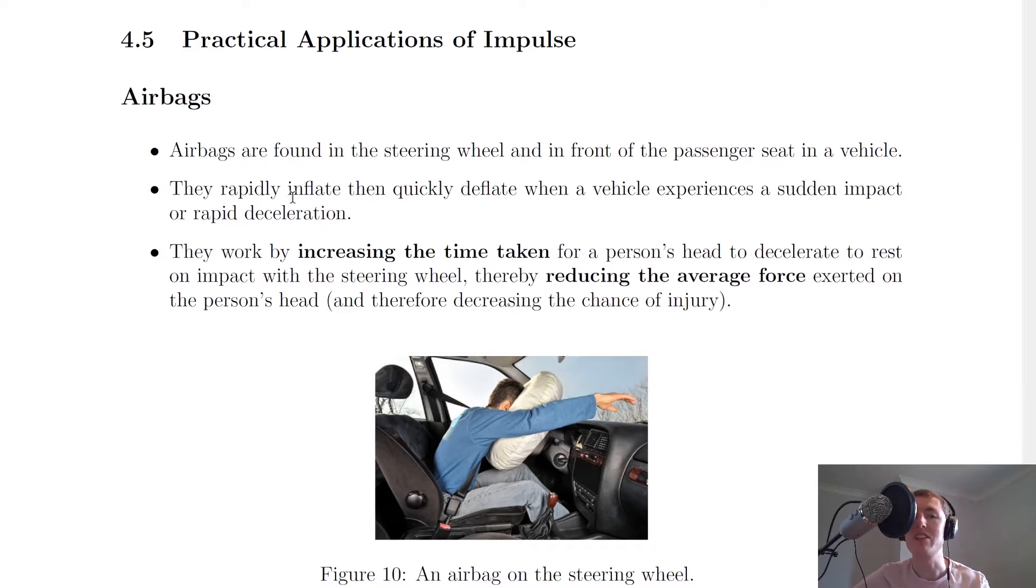So the first one is airbags. Airbags are found in the steering wheel and in front of the passenger seat in a vehicle. They rapidly inflate, then quickly deflate when a vehicle experiences a sudden impact or rapid deceleration. They work by increasing the time taken for a person's head to decelerate to rest on impact with the steering wheel, thereby reducing the average force exerted on the person's head, and therefore decreasing the chance of injury.